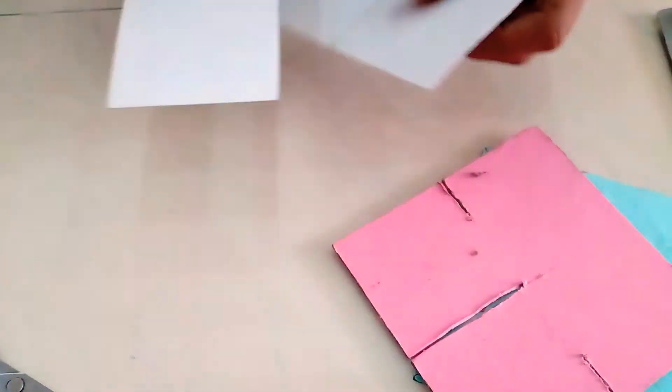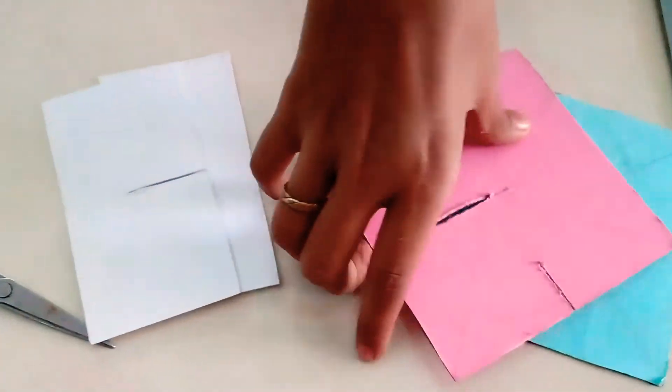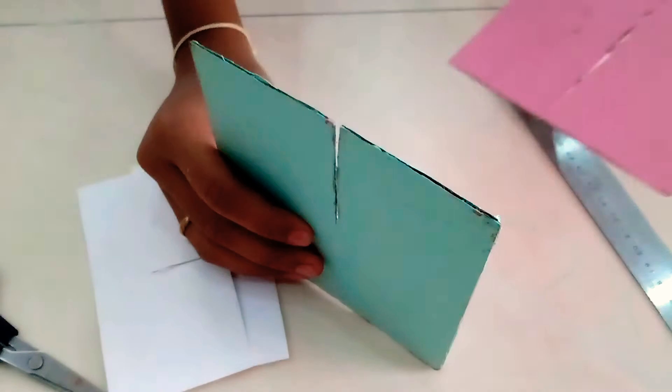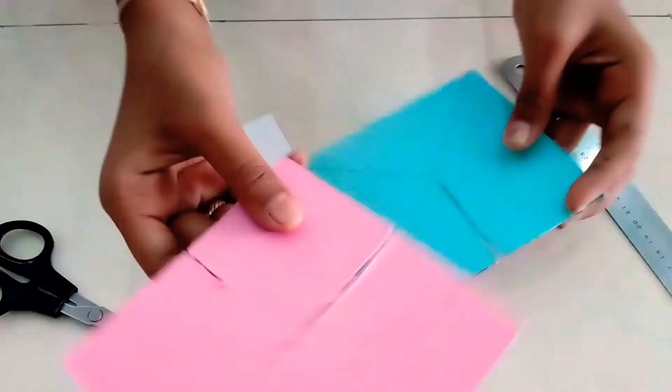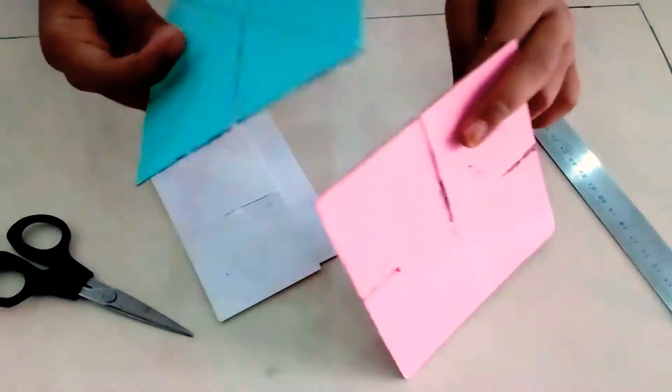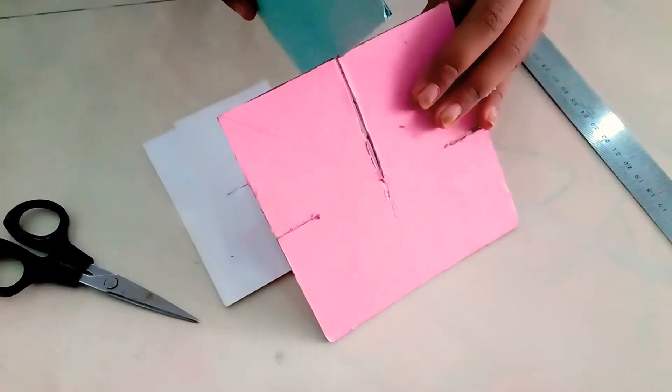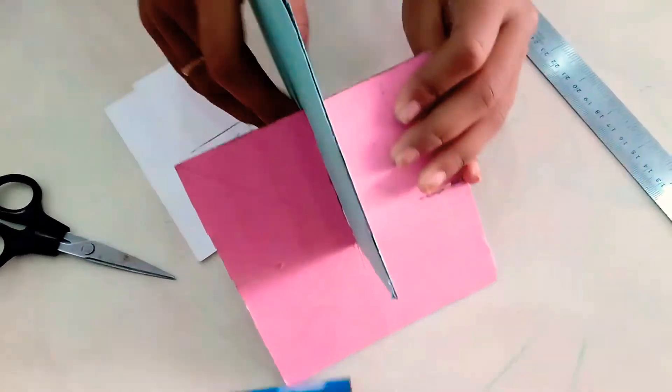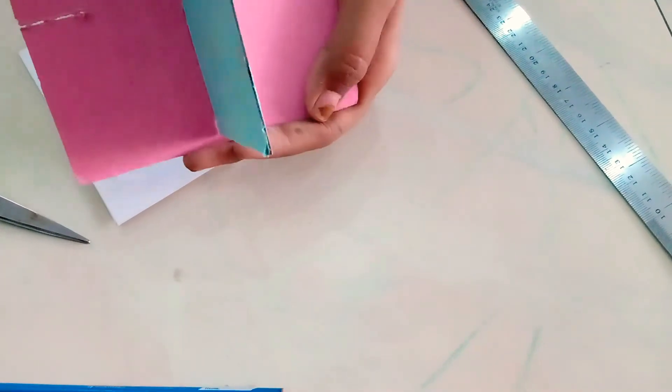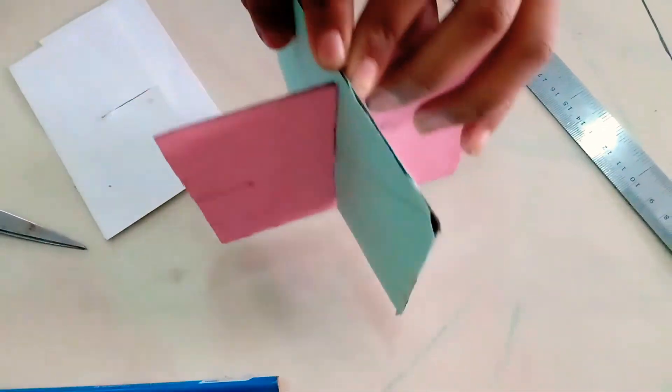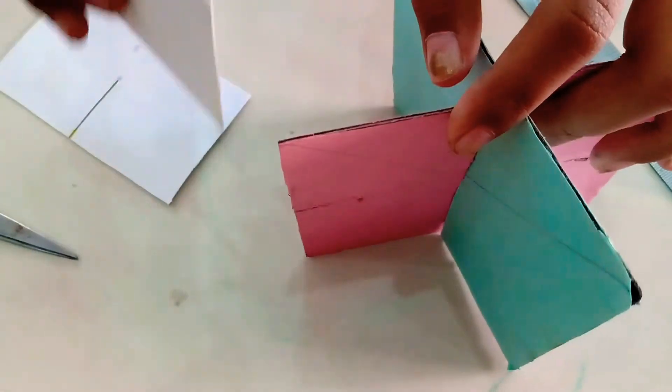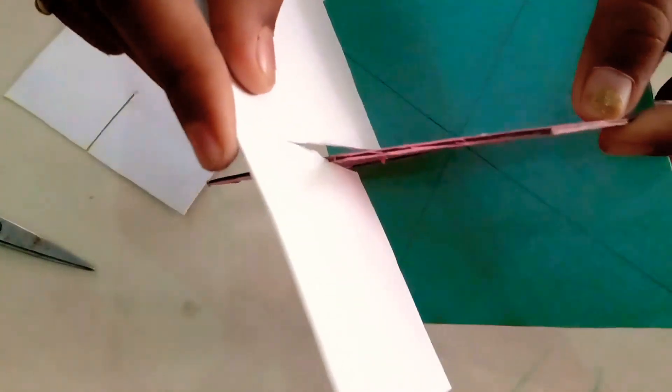Now let us assemble the cardboards. First, you have to take the first cardboard and the second cardboard and insert it this way. Insert it completely. Then the small cardboard should be inserted in the small slits.